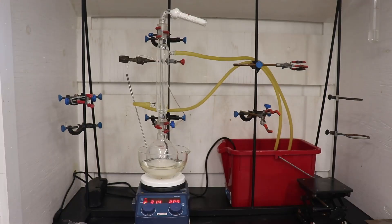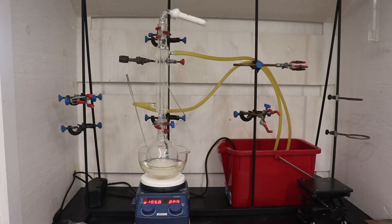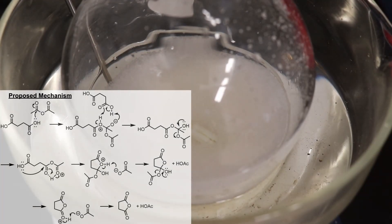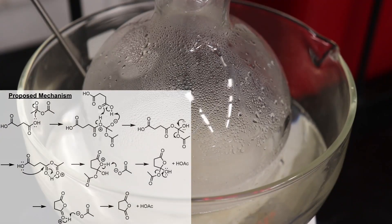The apparatus was arranged for reflux, and a calcium chloride drying tube was added to protect from atmospheric moisture. The flask was then set in an oil bath at 105 degrees Celsius to allow for the heating of the reaction mixture.